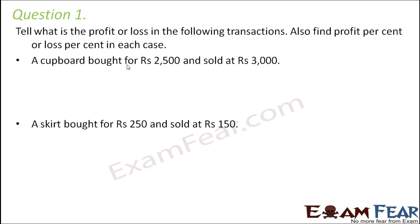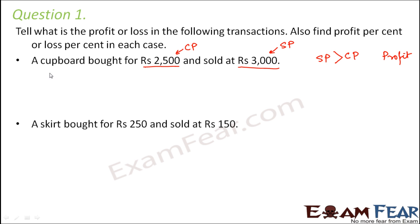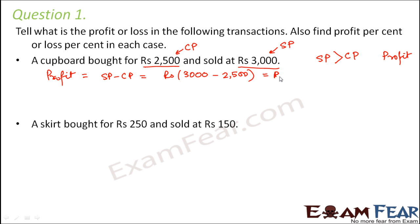Let us look at the first case. A cupboard bought for rupees 2500 was sold at rupees 3000. So basically cost price is 2500 and selling price is rupees 3000. We see that SP is greater than CP, so therefore there was a profit. The profit is given by SP minus CP, that is rupees 3000 minus 2500, which gives rupees 500. So this much is the actual profit.